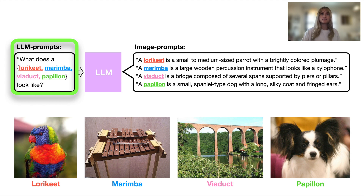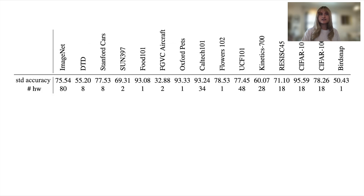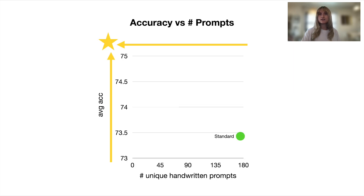Let's look at the prompts used in the standard method for a small selection of datasets, including the 80 prompts used for ImageNet. This is the accuracy when using these standard prompts across 15 different datasets, along with the number of handwritten prompts used for each dataset. Overall, we have an average accuracy of 73.43 across all 15 datasets and a total of 175 unique handwritten prompts. Note that we want to be in the top left corner of this plot, because we want the highest possible accuracy with the lowest possible effort.